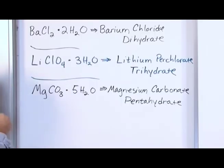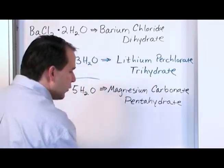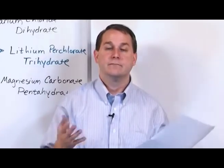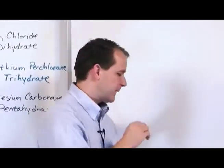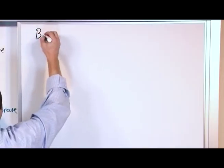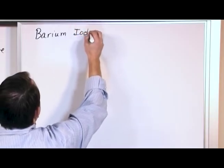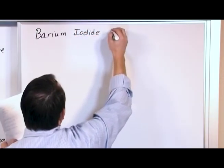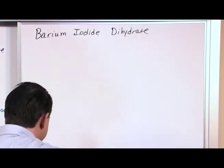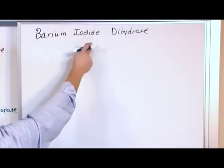So now that we have done that, I've given you the hydrate compound and we have named it. Let's go in reverse and let's write down a hydrate name and let's write the formula. We're basically going to do exactly the same thing in reverse. So let's say we have barium iodide dihydrate.